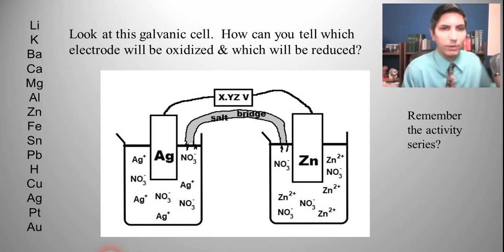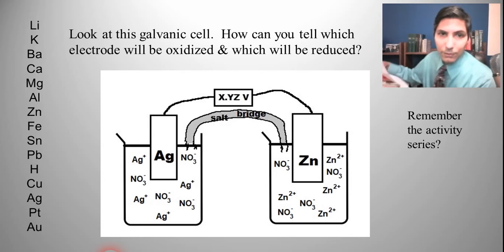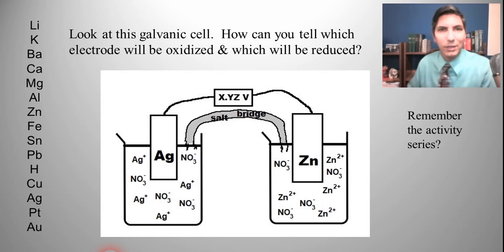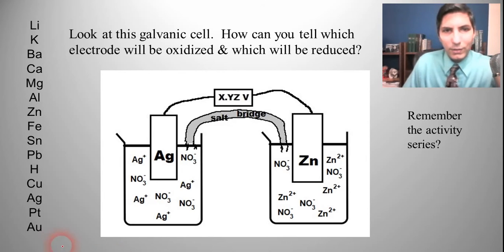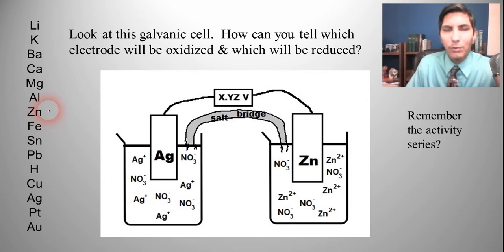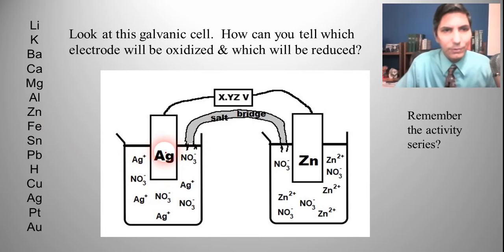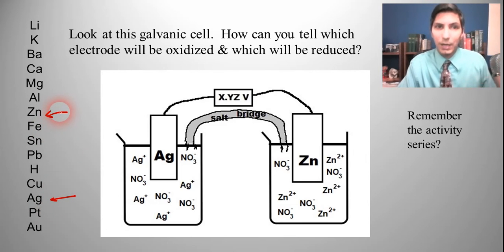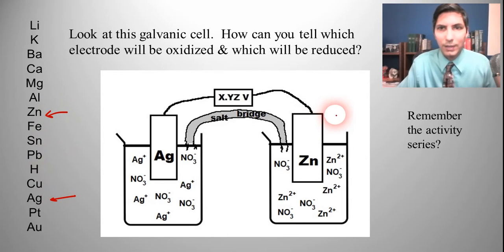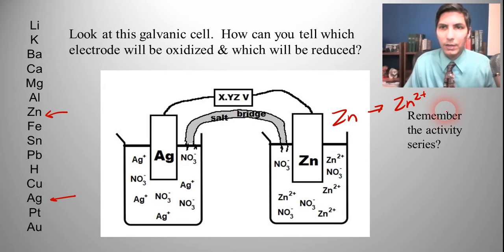You might remember the activity series from an earlier video back in Lesson 11. The elements or metals that are higher up on this activity series are more easily oxidized. So if we compare zinc and silver, zinc is right here and silver is almost at the very bottom. That tells us that zinc is going to be more easily oxidized — it's going to be oxidized by the ions underneath it. So zinc goes from zinc metal into zinc 2+ ions.